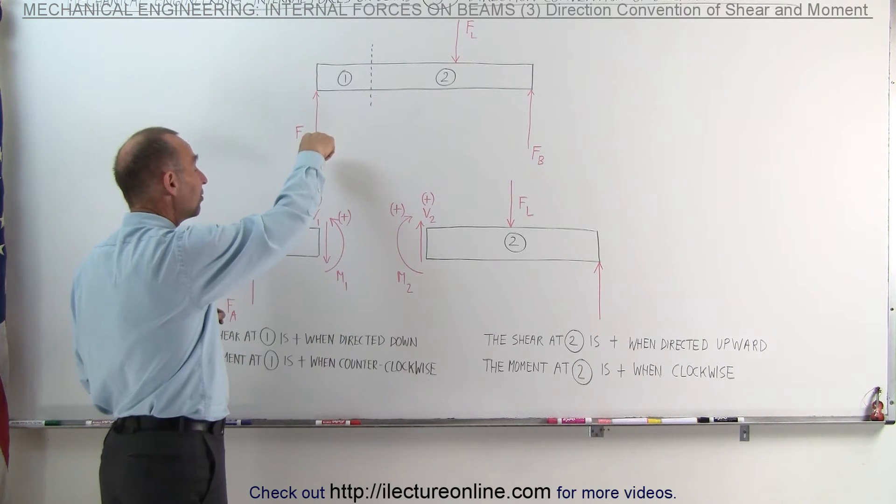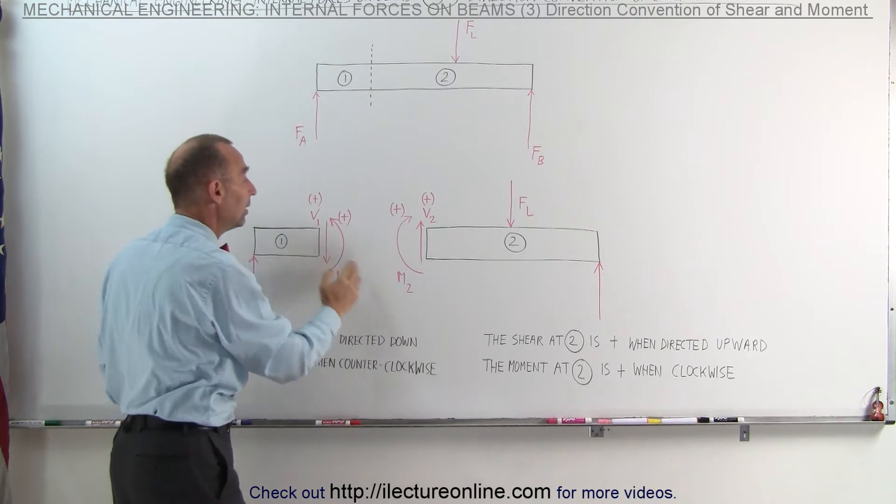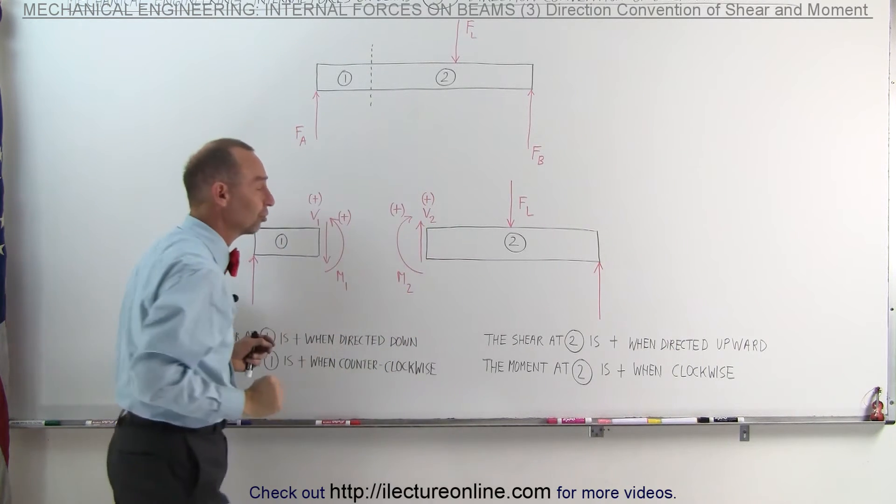So by convention, we call it positive when the shear is down on section 1, and we call it positive when the shear is up on section 2.